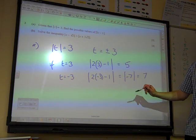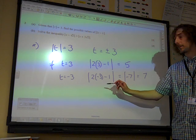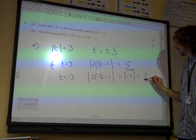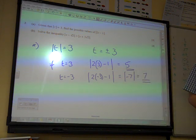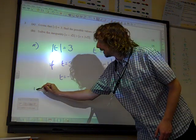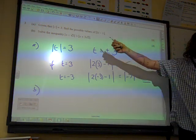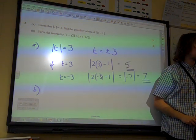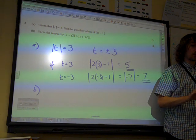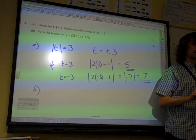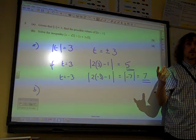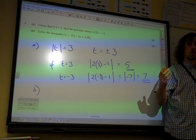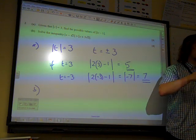So the possible values of 2t minus 1 modulus of that are 5 and 7, and that has 3 marks. Part B, just a quick point to remember here, the first two has Parts 1 and 2, and the first two questions, that was because they were linked. You were using your answers from Part 1 and Part 2, it was all connected.